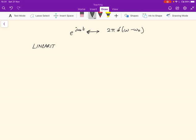Linearity is defined like this. Let's say that we have a function x₁(t) and its Fourier transform, which we write like this, is given by x₁(jω). And x₂(t) has a Fourier transform of x₂(jω).